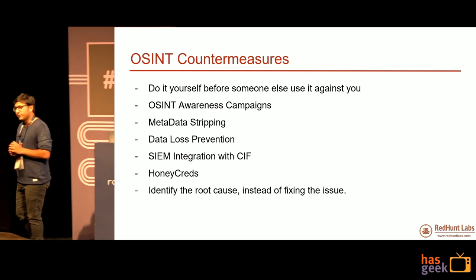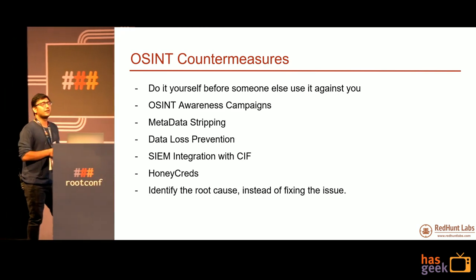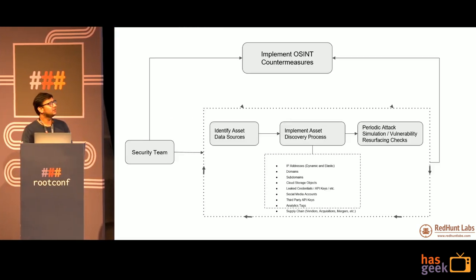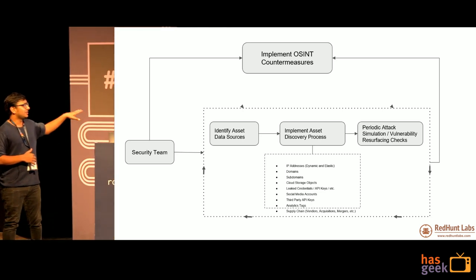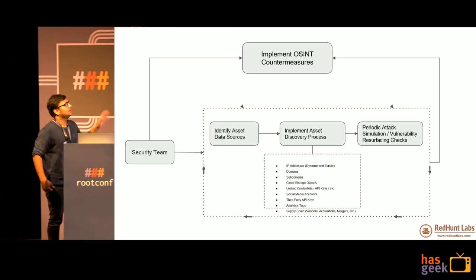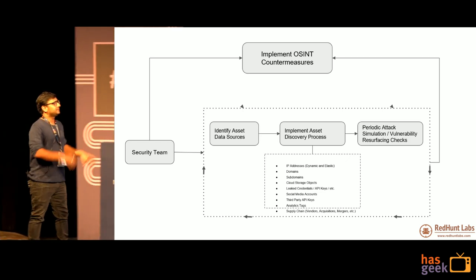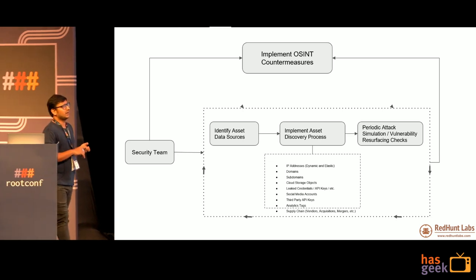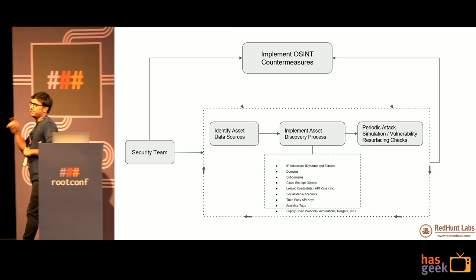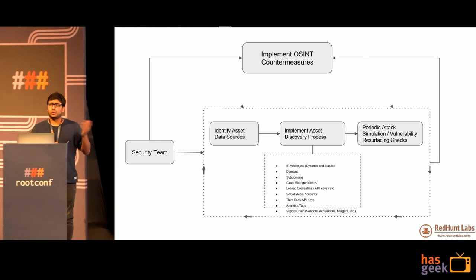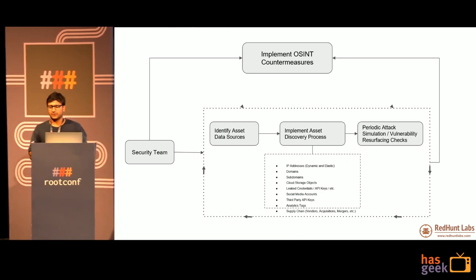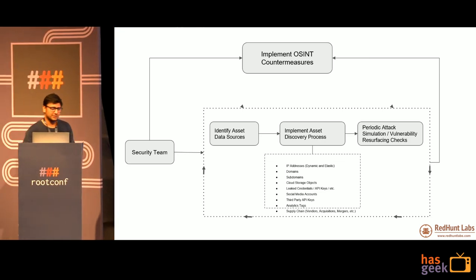Whatever I've talked about so far is not the ultimate way — there are many other things that can't be covered in this duration. The talk is just to give you an idea of what kind of attack surface is lying out there and that you should really focus upon it. The process in a nutshell: have a security team; if you don't have one, try making one — it can comprise just one person. Always keep implementing OSINT countermeasures. Have a process of identifying assets, asset data sources, implementing asset discovery, then periodic vulnerability checks and scanning. Once you have this data, pass it back to OSINT countermeasures because now you have more insight into what issues your organization is facing.